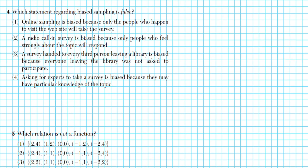Let's take a look at problem number 4. It says: which statement regarding biased sampling is false? Biased basically means that only particular people are positioned to respond, and sampling means that you're selecting a specific amount of people from a sample space — not everyone, just a few.